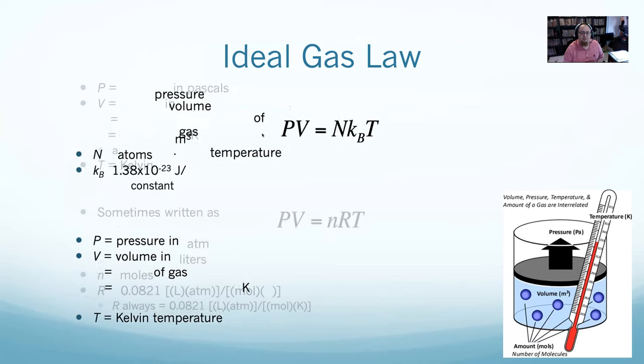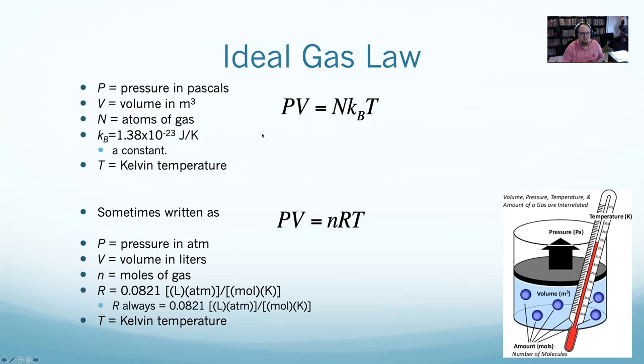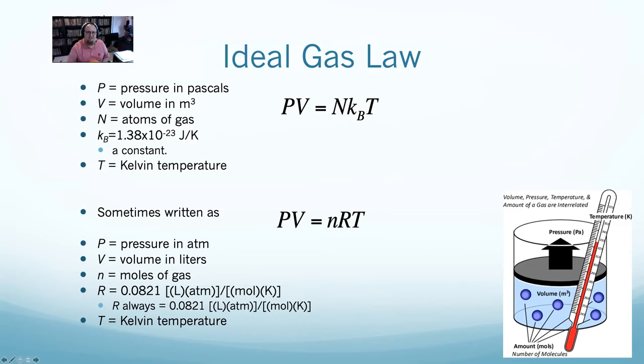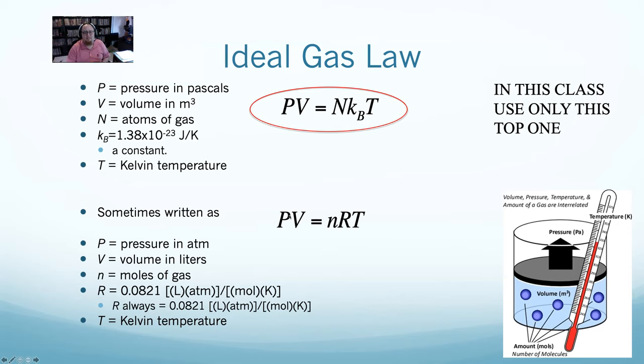Some of you might have seen this in a different form before, PV equals NRT. The short version is chemistry uses stupid units. Chemists use PV equals NRT because they measure their pressure in ATM, their volume in liters, and its number of moles. We are going to use PV equals NKT in this class. Like all the way back in lab one, where we did this. Yes, I'm going to play with a balloon for class.